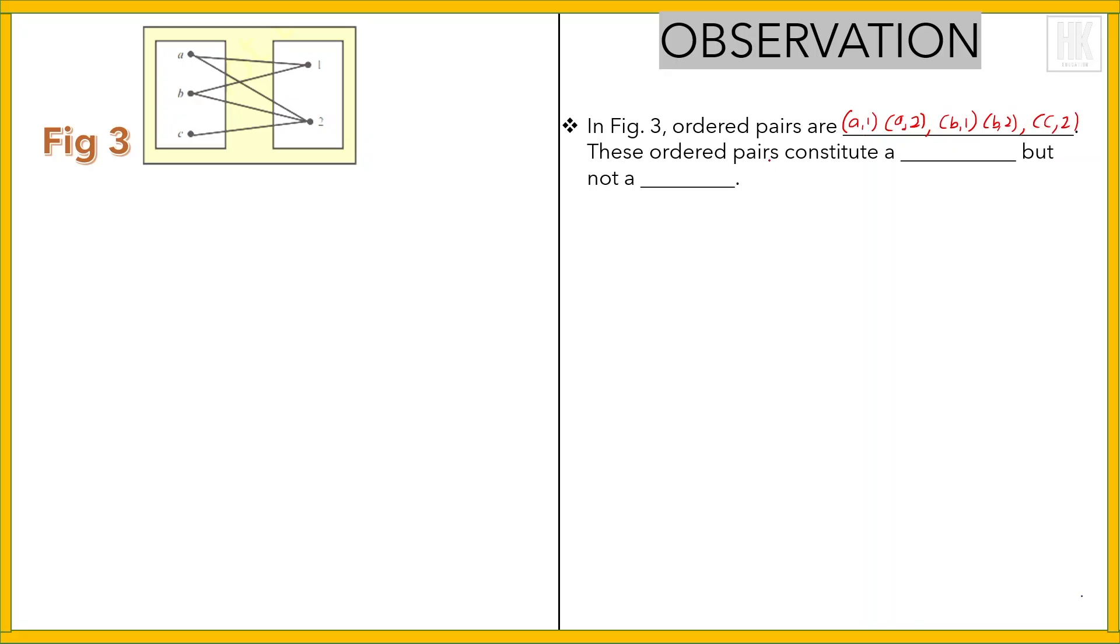But it is not a function. Why is it not a function? Because the element in the first set, a, has two different images, so it is not a function.